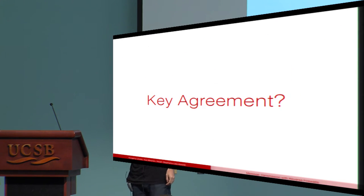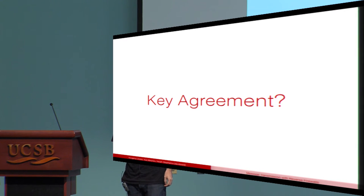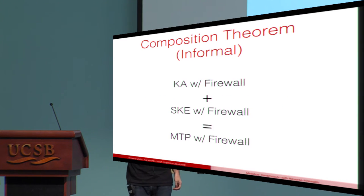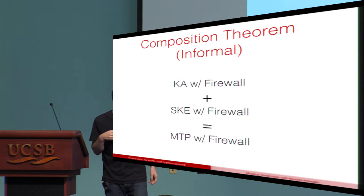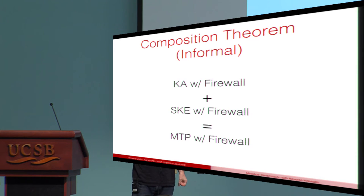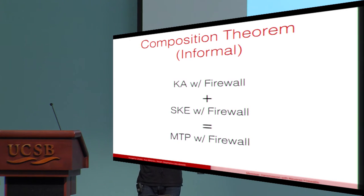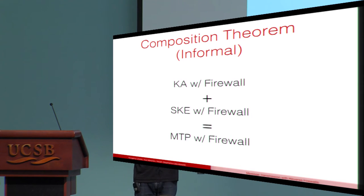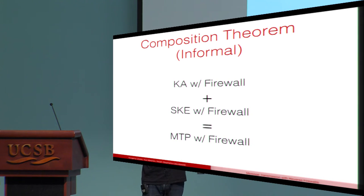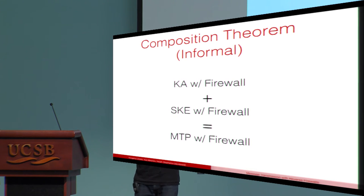Things are non-trivial here, but the next question is: what about key agreement? It turns out key agreement works. We have a composition theorem: if you combine key agreement with a firewall and secret key encryption with a firewall, you get message transmission with a firewall. This composition theorem exists classically — it's so trivial nobody mentions it — but in firewalls it's not entirely trivial, and we've proven it. This justifies the study of key agreement in the firewall model.